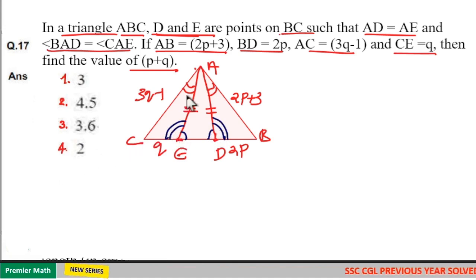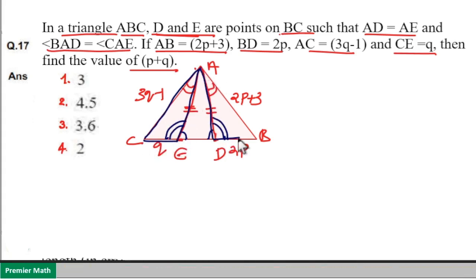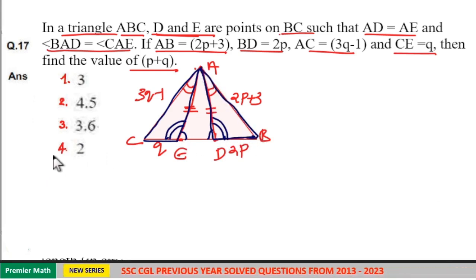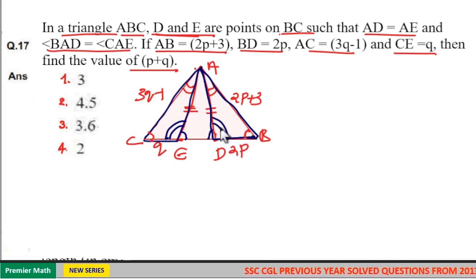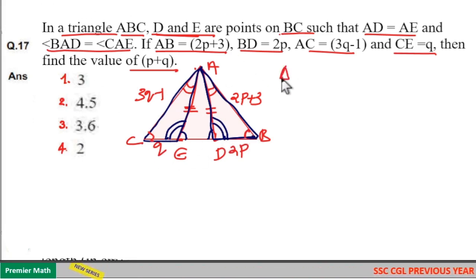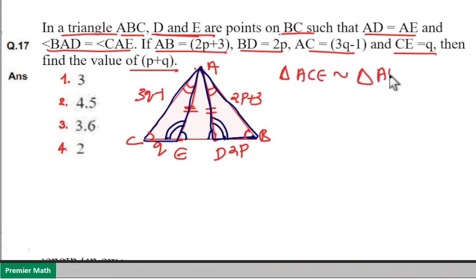In these two triangles — triangle AEC and triangle ABD — all three angles are equal. Because two angles are already equal, the remaining third angle is also equal. Three angles equal means these two triangles are similar. That is, triangle ACE is similar to triangle ABD.